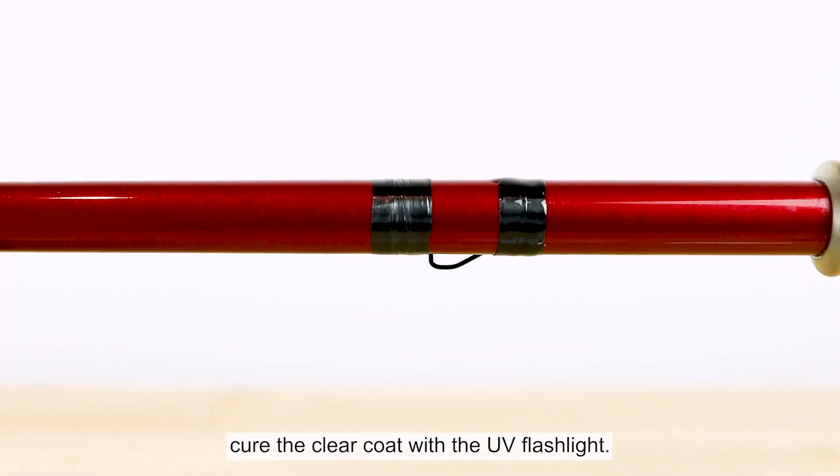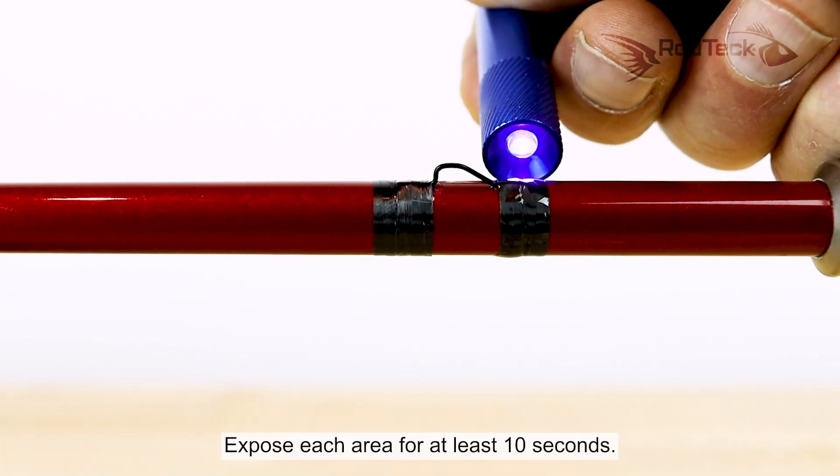When you've completely covered the wrap, cure the clear coat with the UV flashlight. Expose each area for at least 10 seconds.